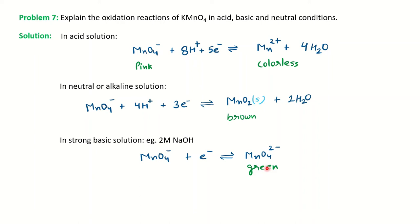In a strongly basic solution, such as 2 M NaOH, MnO₄⁻ is converted to MnO₄²⁻ and signals the endpoint by a color change to green. These are the chemical reactions of potassium permanganate in different media. We have discussed several important questions from the redox titration curve — I hope it will help you for your examination. All the best, happy learning!